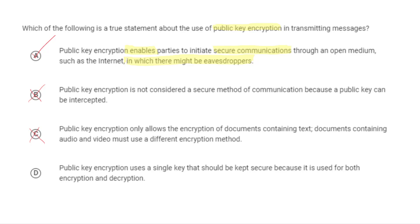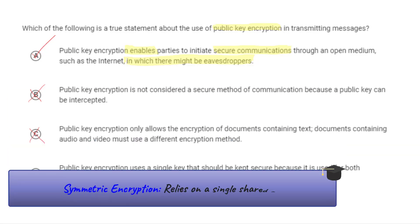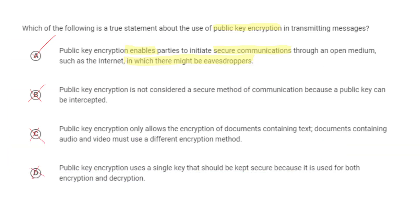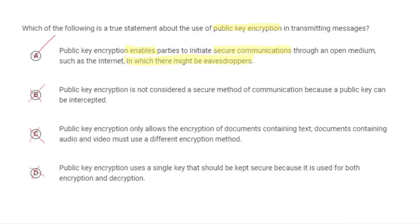Asymmetric encryption, of which public key encryption is an example, uses two keys — a public key and a private key — and they're different; that's why it's called asymmetric encryption. On the other hand, symmetric encryption uses only a single key, the same key to encrypt and decrypt, which is what answer D describes. Symmetric encryption is an example of where you'd need to share that one key ahead of time. A good example of this is the Caesar cipher, probably one of the first taught.